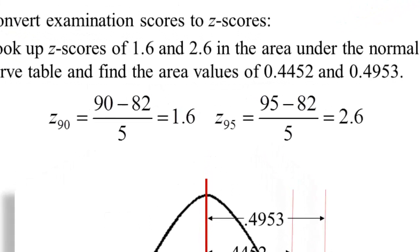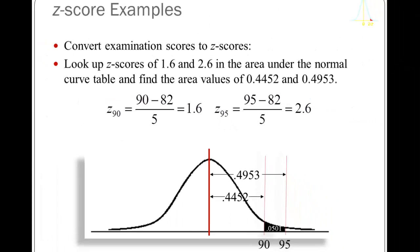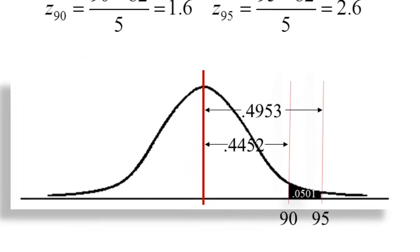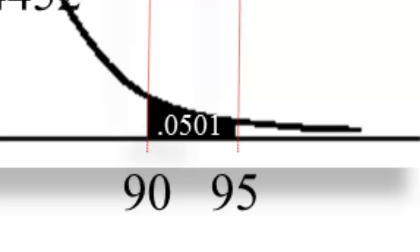Step one: convert both scores to Z-scores. Z sub 90 is a positive number: 90 minus 82 divided by 5 is a Z-score of 1.6. Z sub 95 is also positive: 95 minus 82 divided by 5 is a Z-score of 2.6. Entering the Z-table, between 82 and 95 there's approximately 0.4953 of the distribution, and between 82 and 90 there's approximately 0.4452. The difference between those two areas is 0.0501, representing the area in the shaded section.